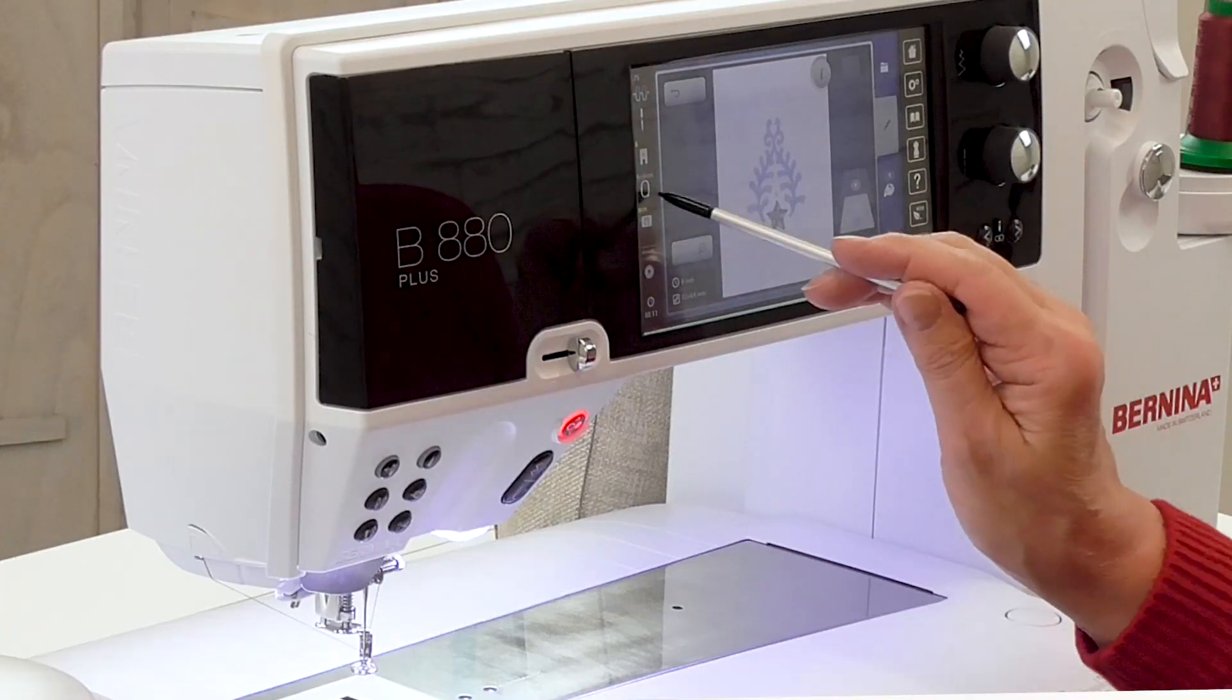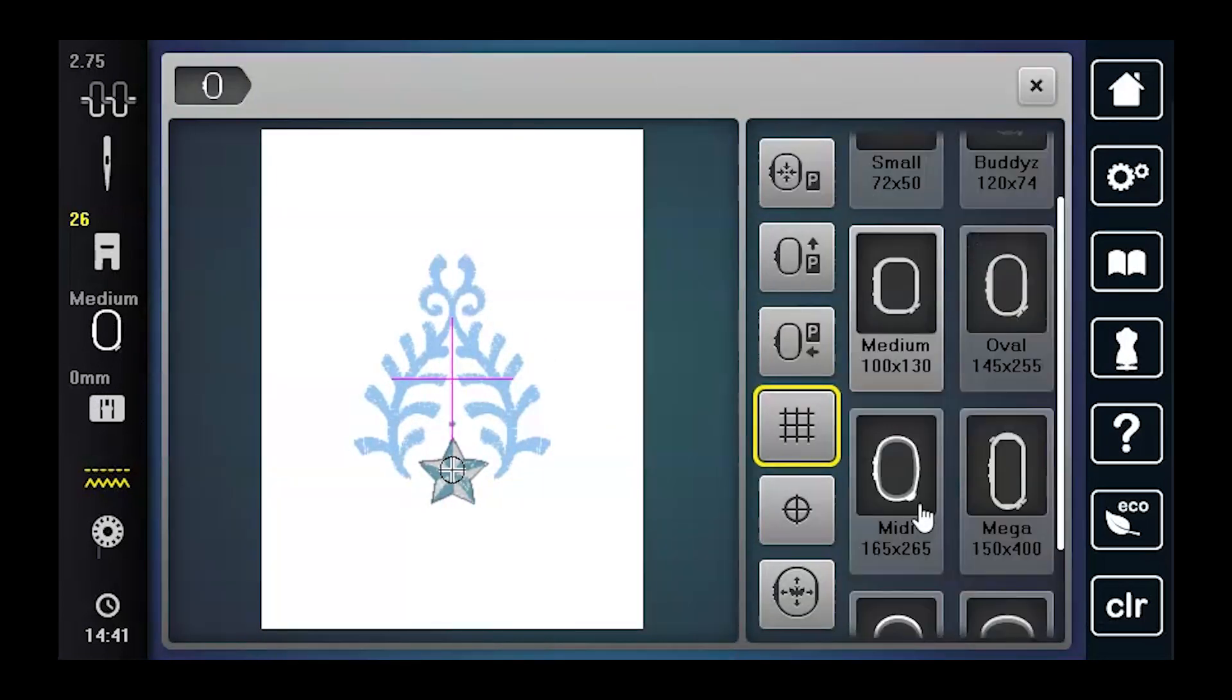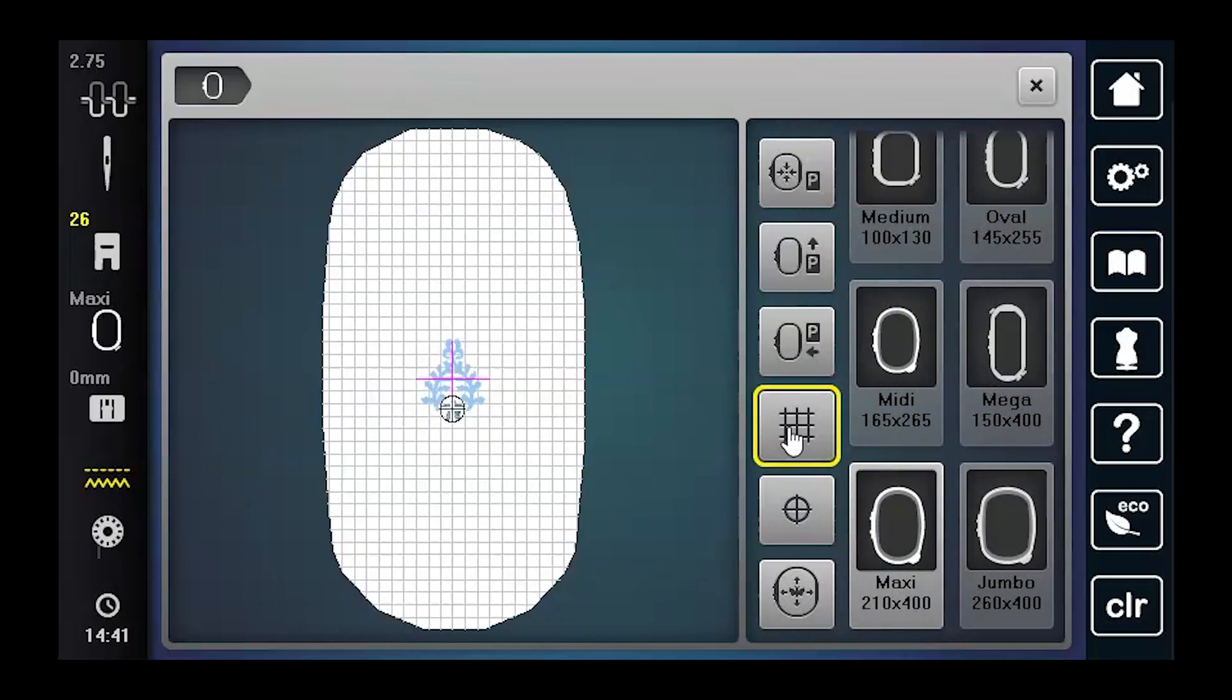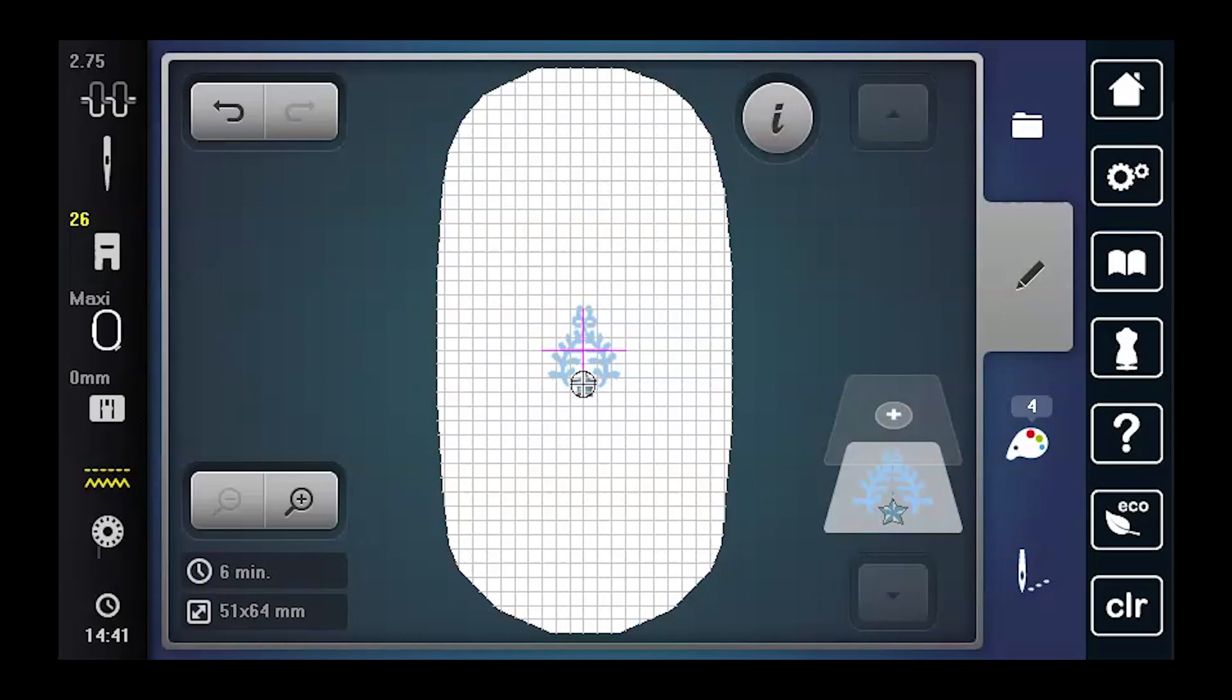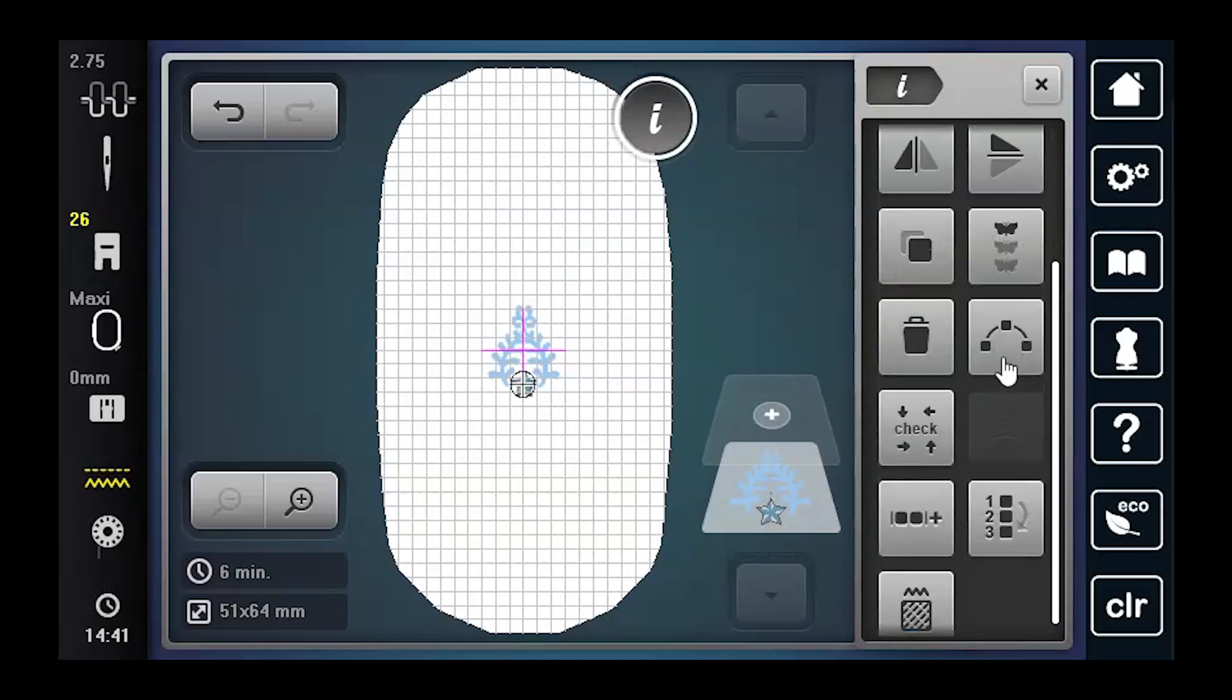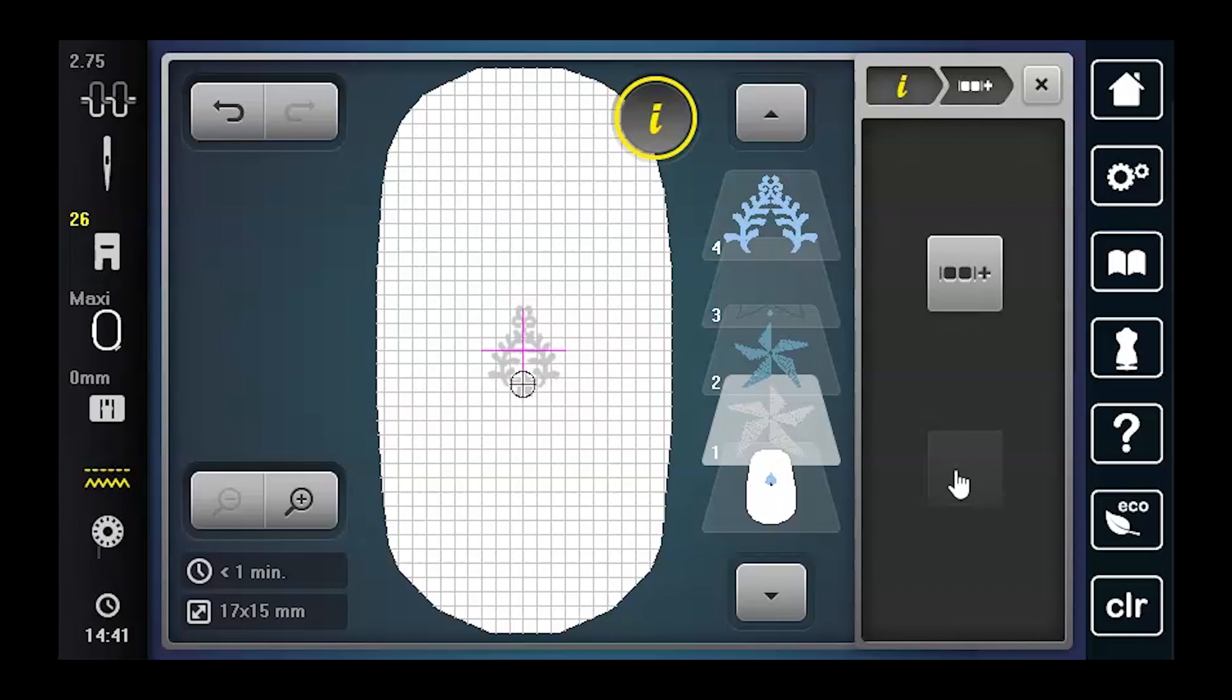I have the design up on the screen, we're going to be using the maxi hoop. So I'm going to go over to the hoop menu and scroll down and find the maxi hoop and make sure that comes up, turn on the grid. So I have the ability to see placement lines. Let's close that. Now, with the design on the screen, what I want to do is go up to the information I and open that up. So I have my editing tools. We're going to scroll down and we are going to ungroup this design.